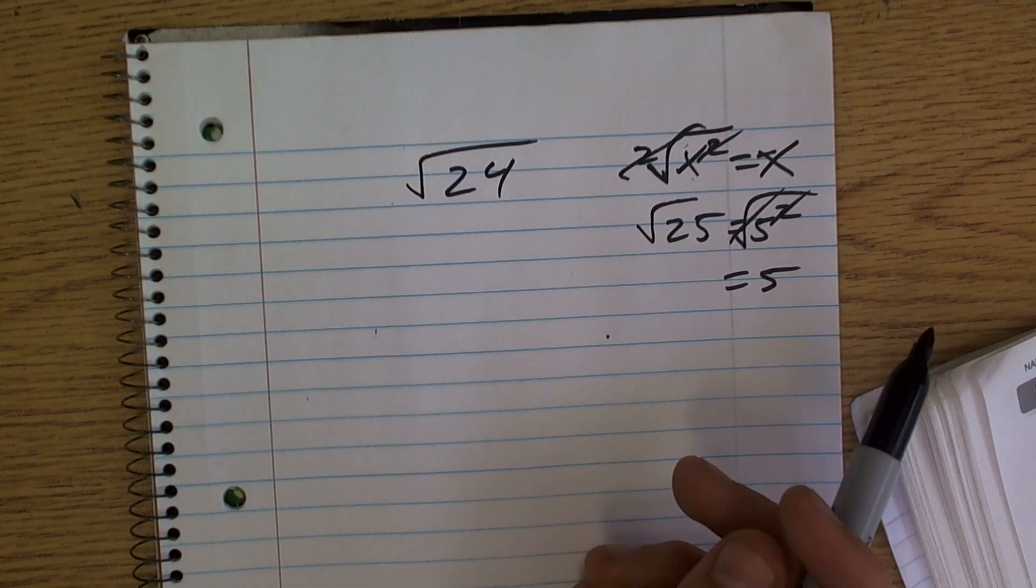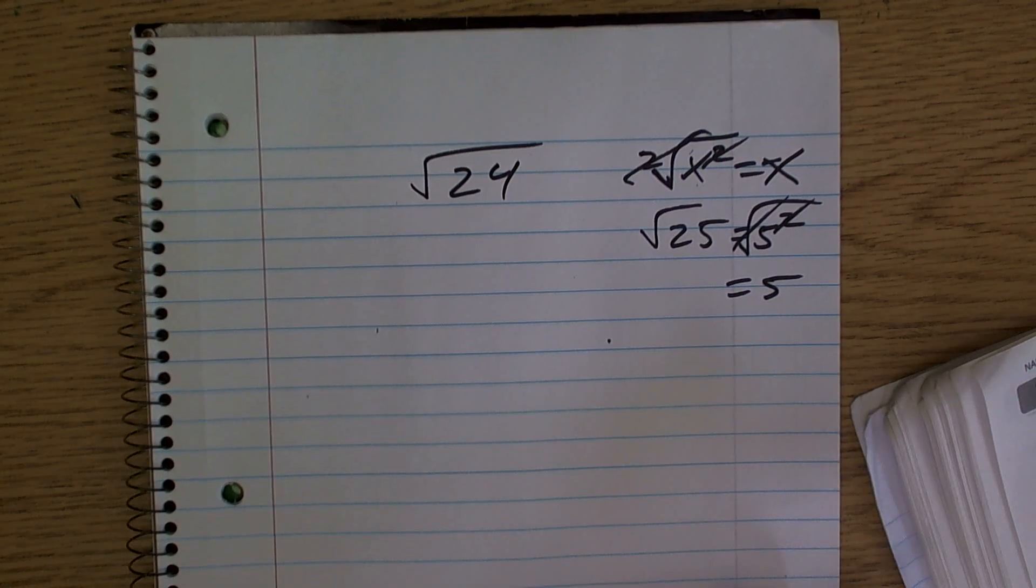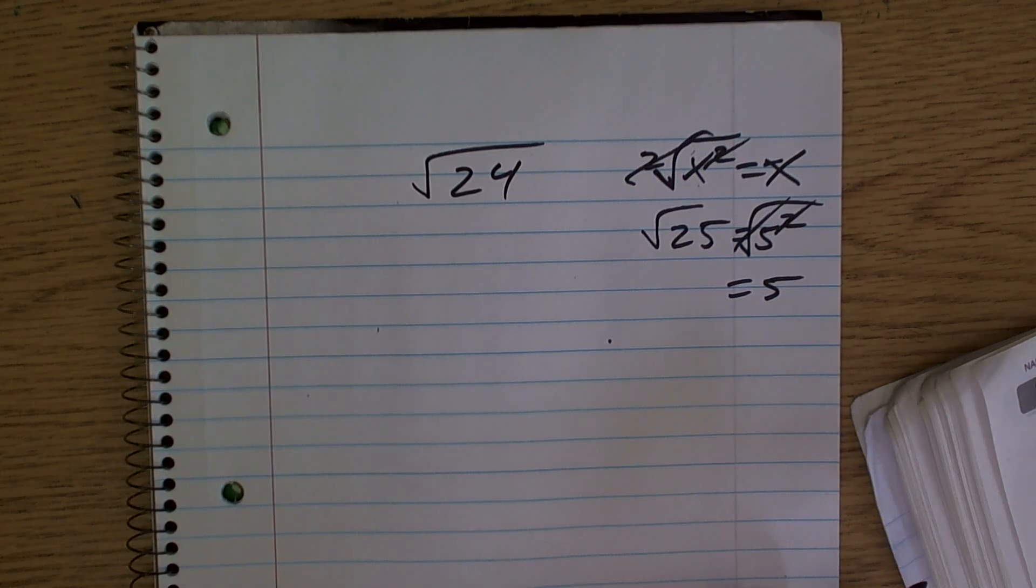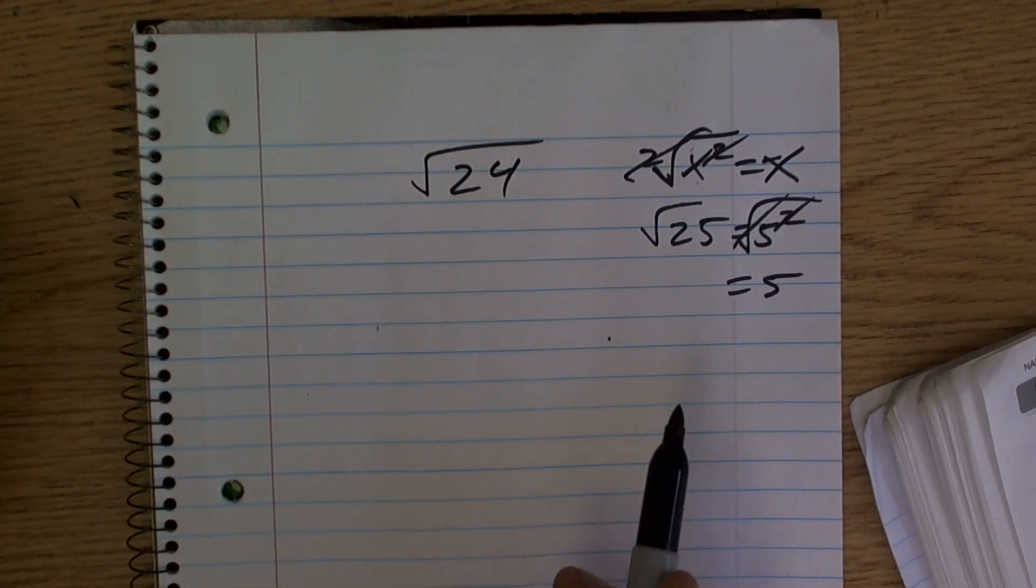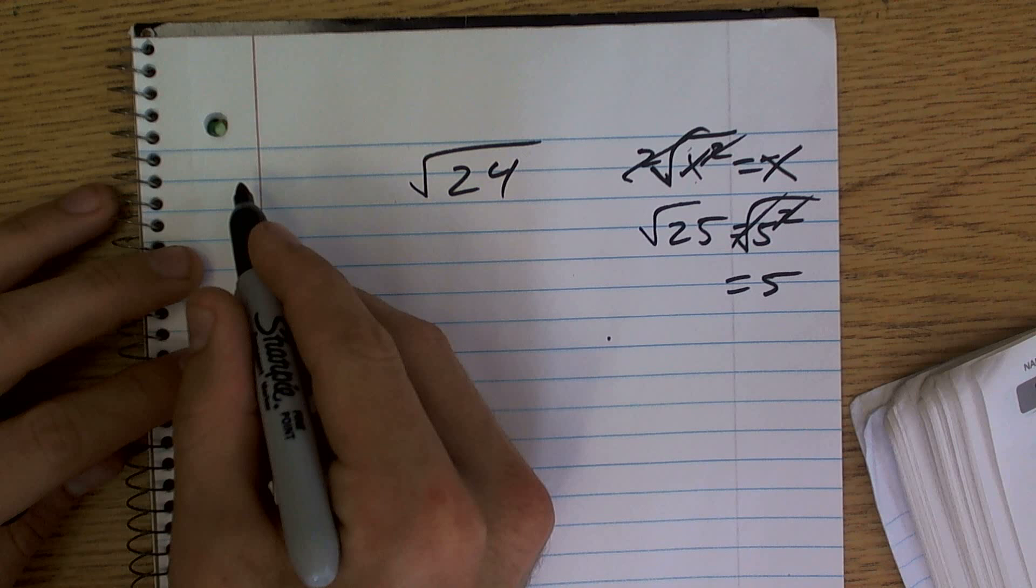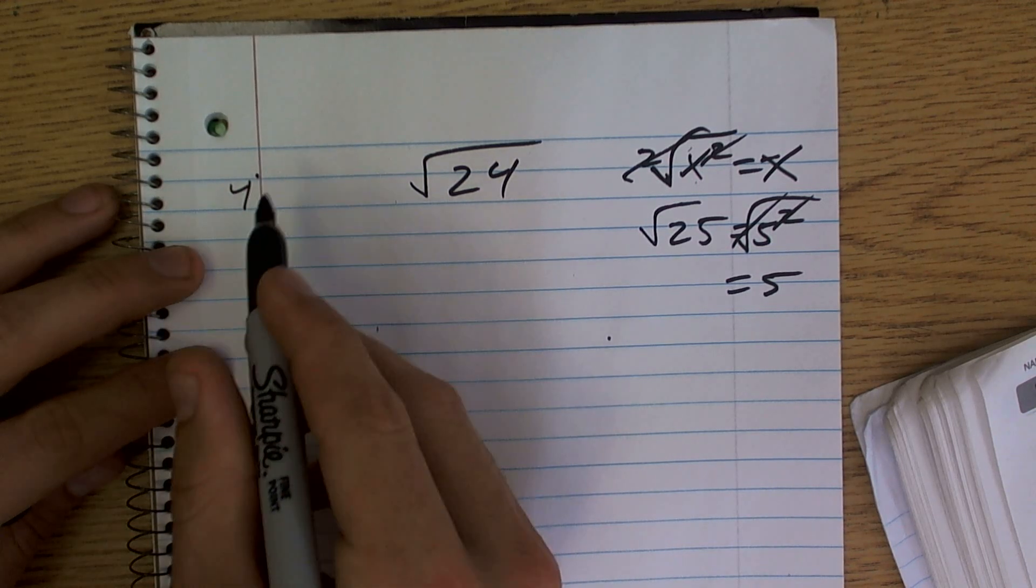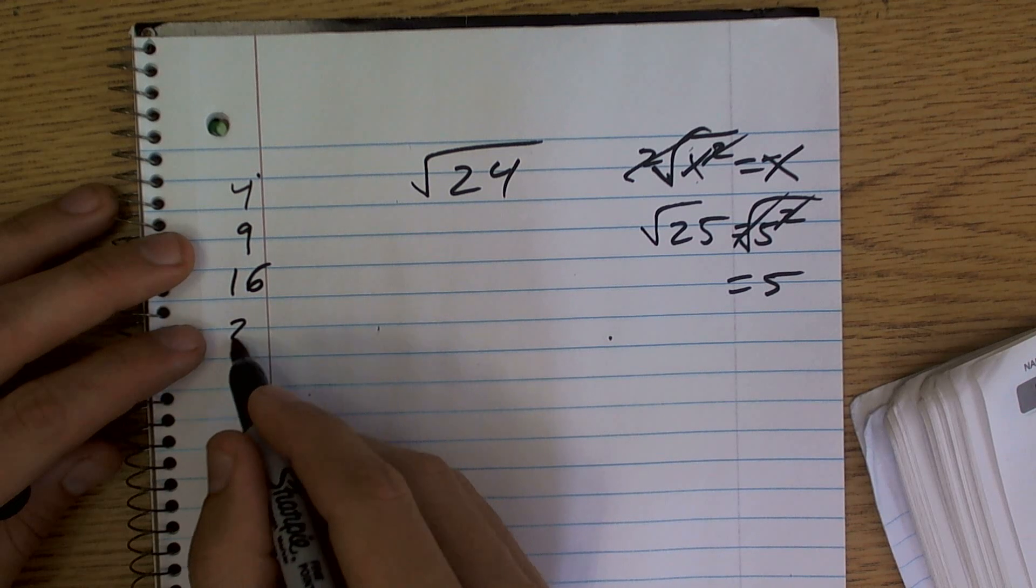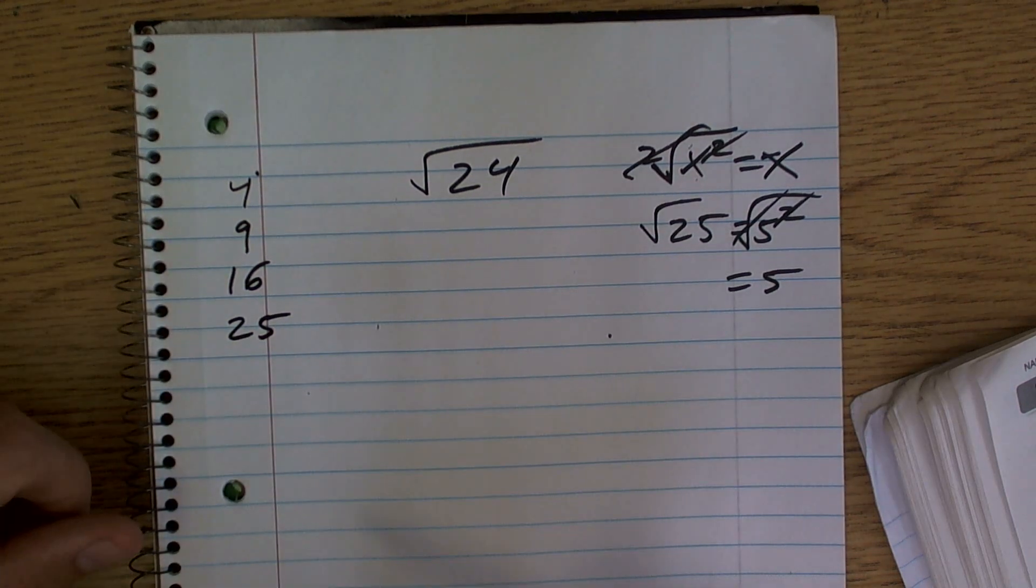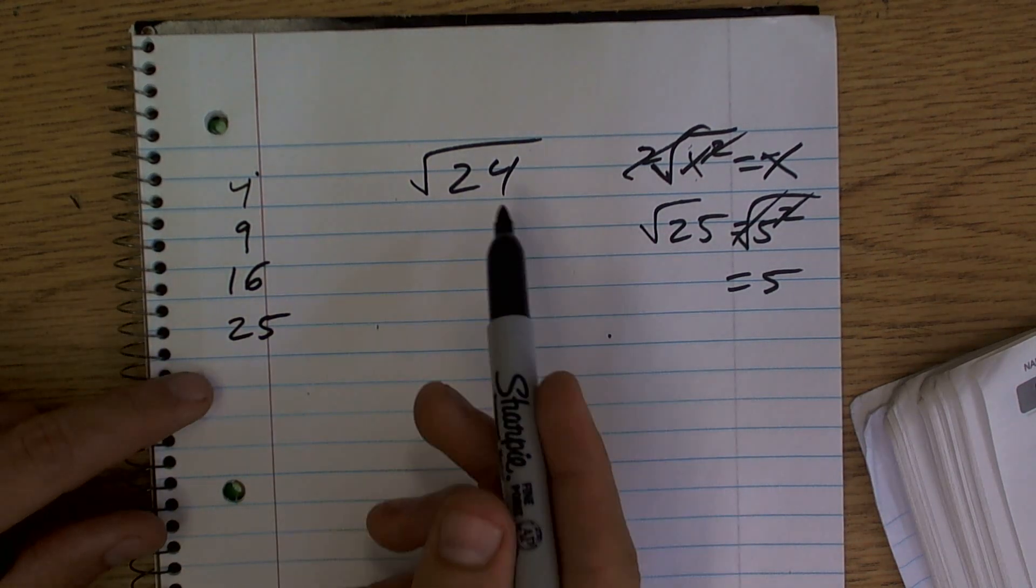So what I'm going to do is I'm going to look to the square numbers that I do know and see if some way we can rewrite 24 with those square numbers. So the square numbers I do know is 4, 9, 16, 25. And obviously I'm not going to keep on going because it's above 24.